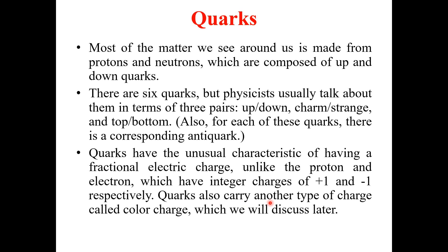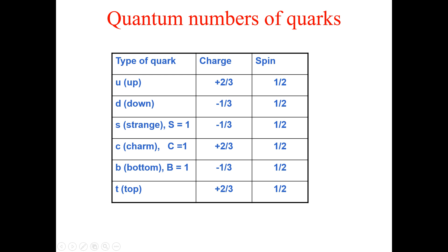Quarks also carry another type of charge that we call color charge. This is a new type of charge that we have only for quarks, and we will discuss this concept later in this lecture. Now let's talk about the quantum numbers of the quarks. On the left-hand side of this table, we have the type of quark, the charge carried by each type, and the spin each type has.